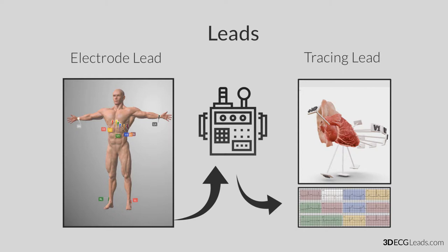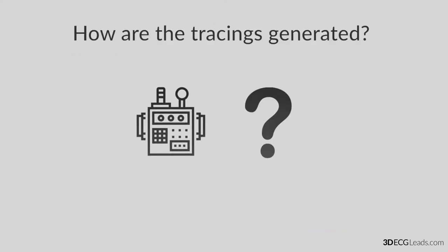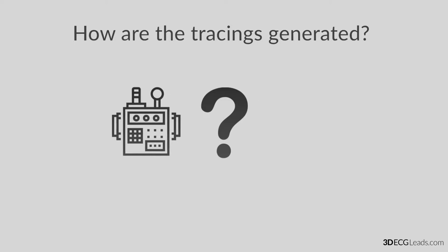Now the next question is, how are 10 skin electrodes generating 12 different readings? To answer this question fully, we will have to look a little deeper into the way an ECG machine works.